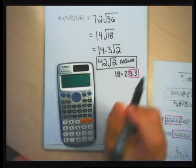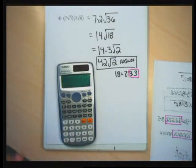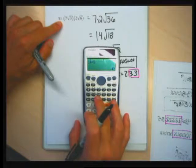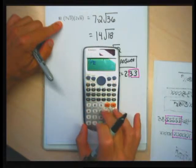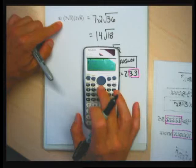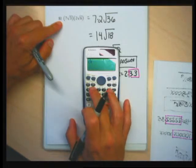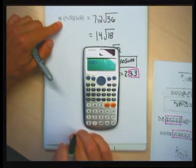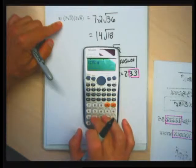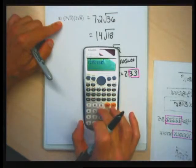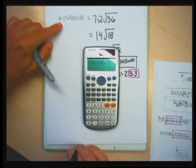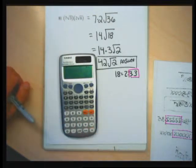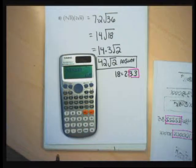This is another problem where I didn't need to do any work by hand because it only has square roots without letters — my calculator can do that. So let me verify: parenthesis, 7, square root of 3 — arrow out of the square root — then parenthesis, 2, square root of 6, close parenthesis. That's the original problem. I see 42 square root of 2 when I hit enter, so I know my answer is correct.